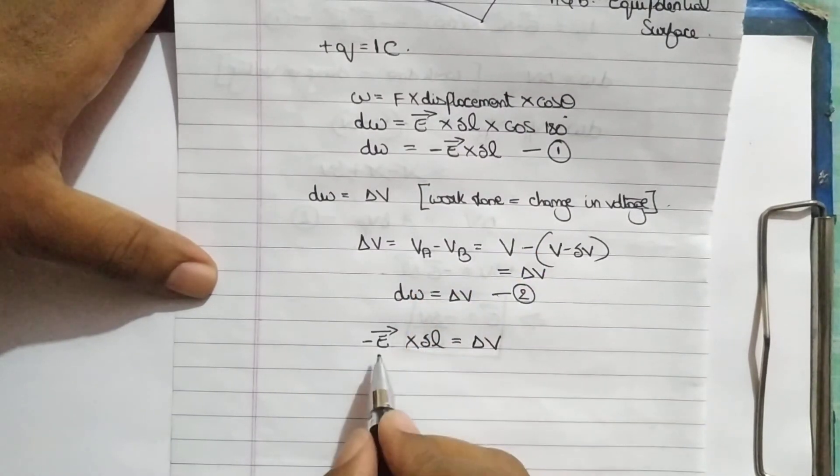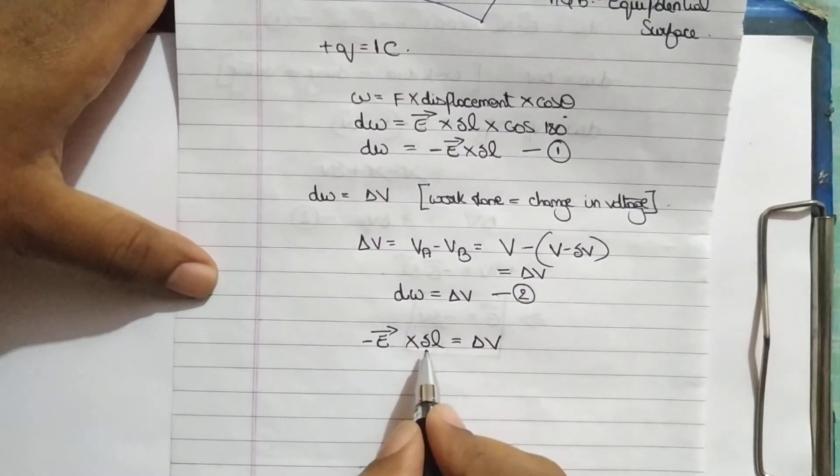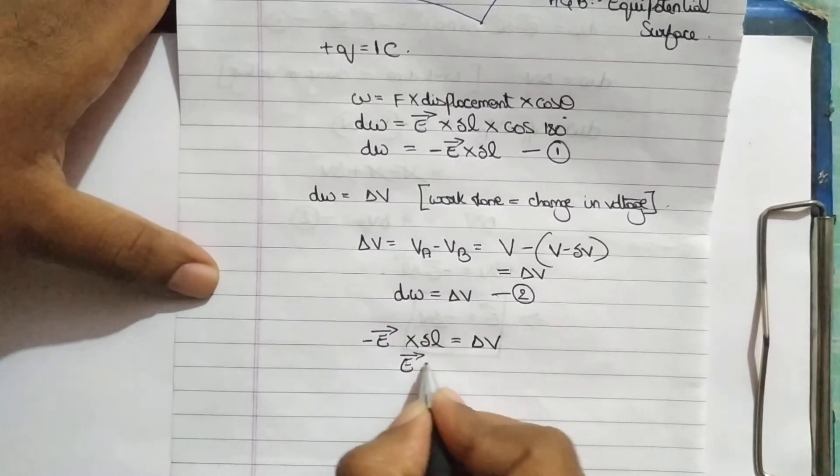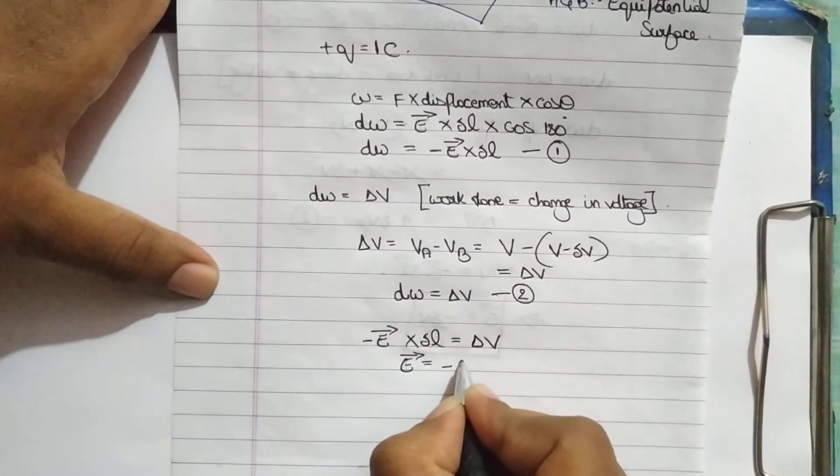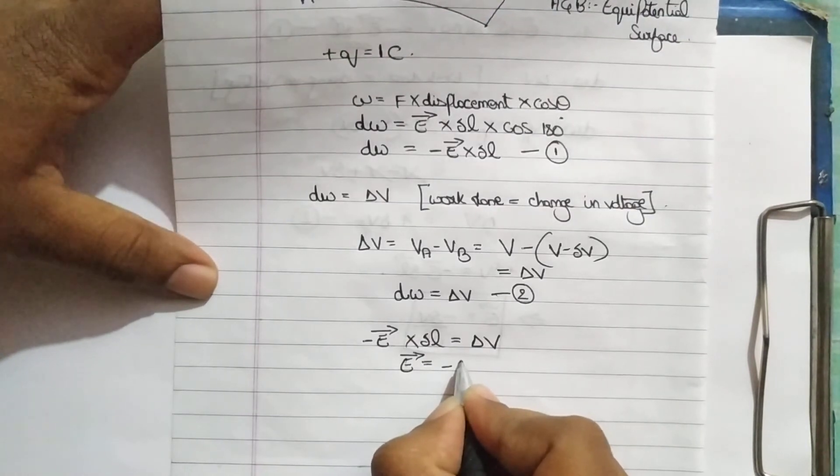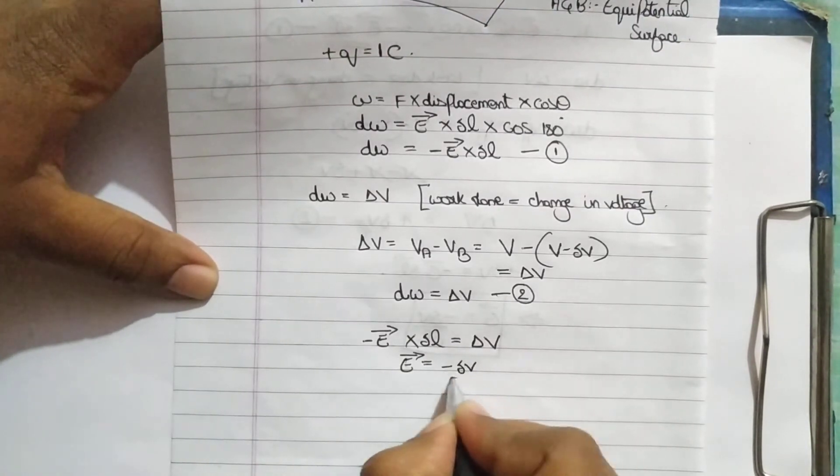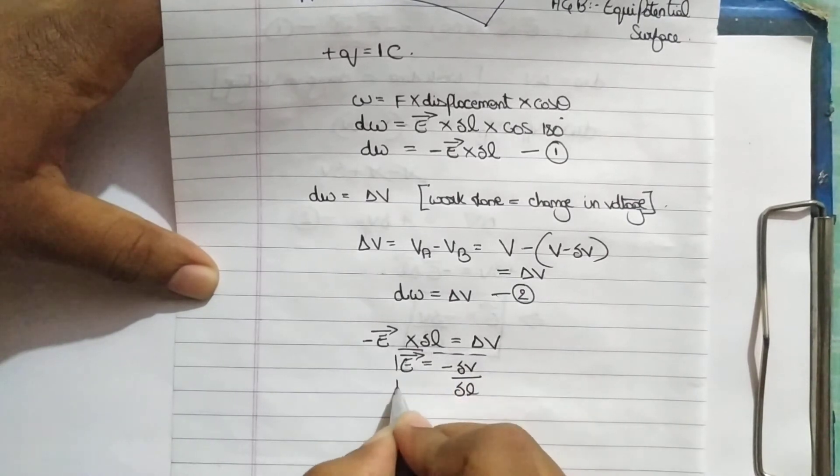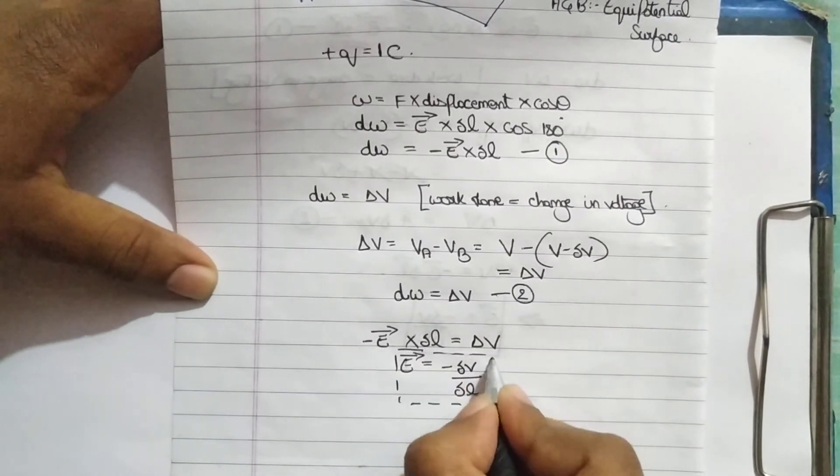Now equating RHS, minus E into delta L gives us delta V. From this, E is nothing but minus delta V by delta L. We obtained the final equation. That's all.